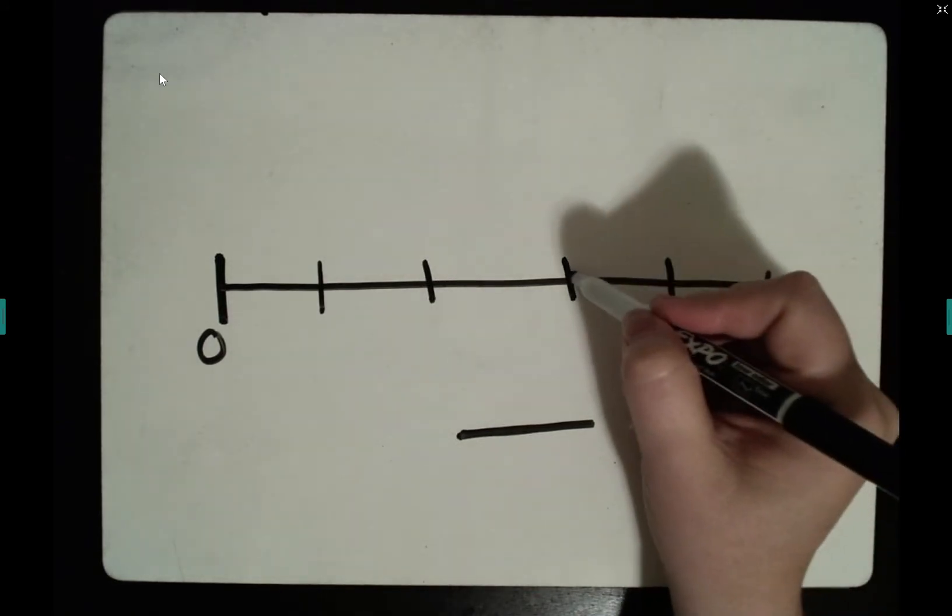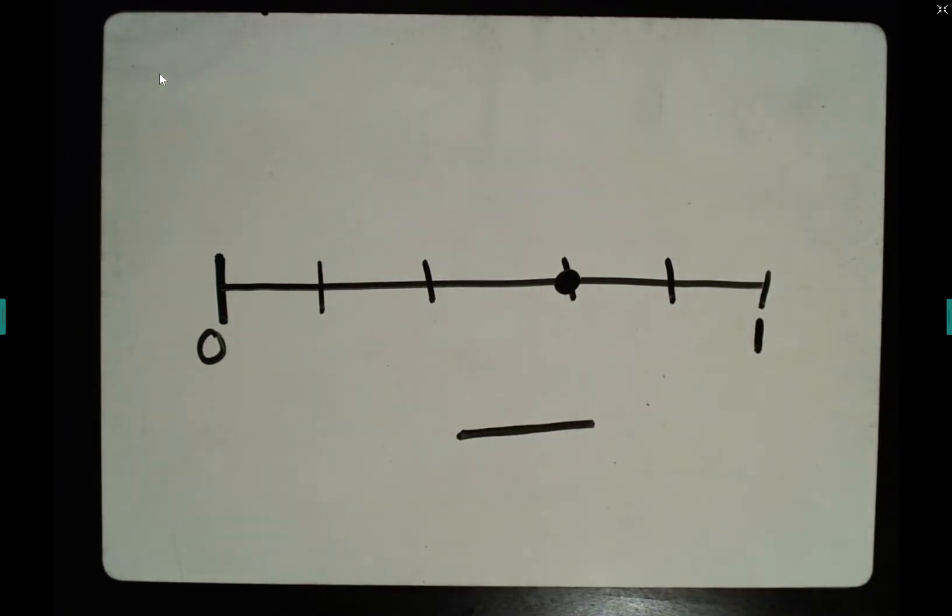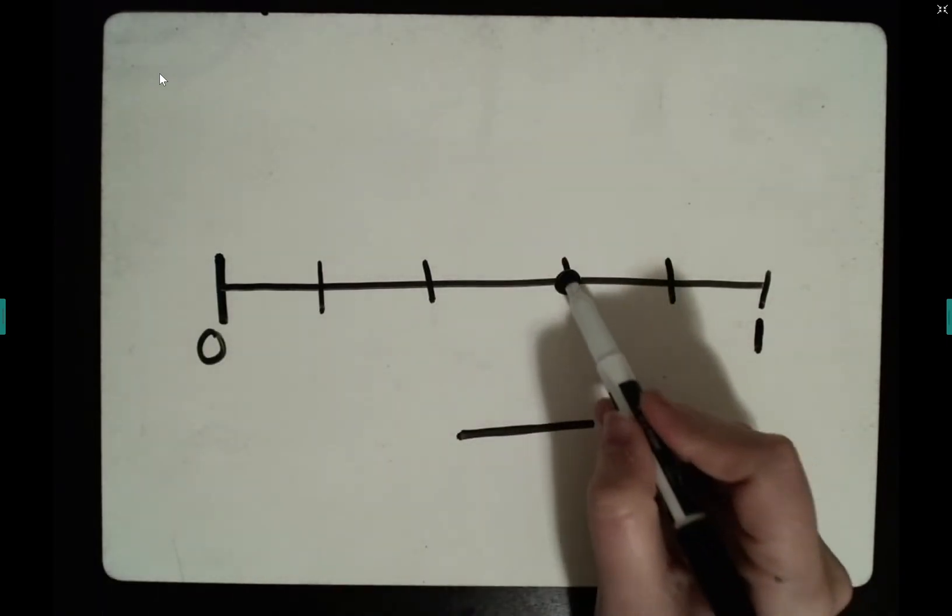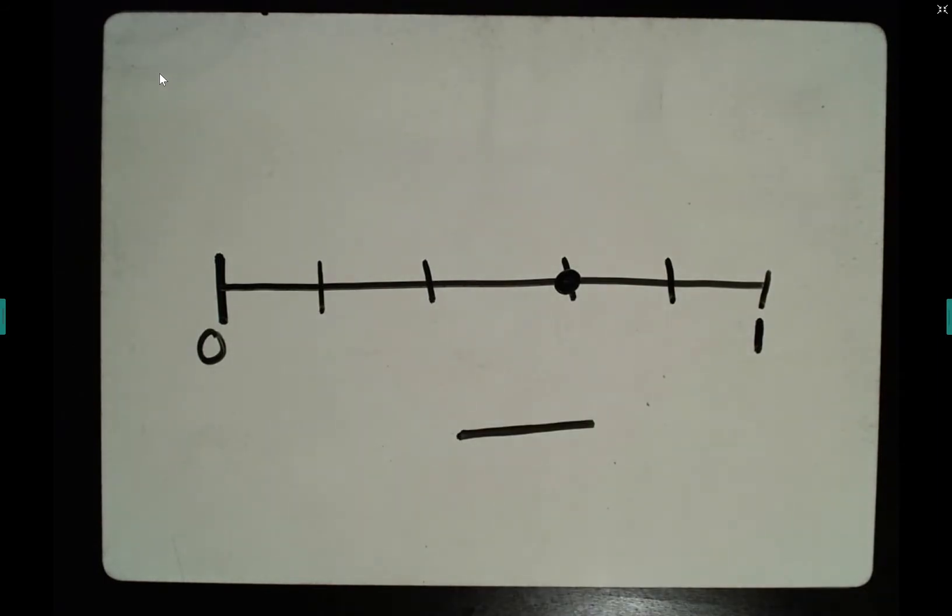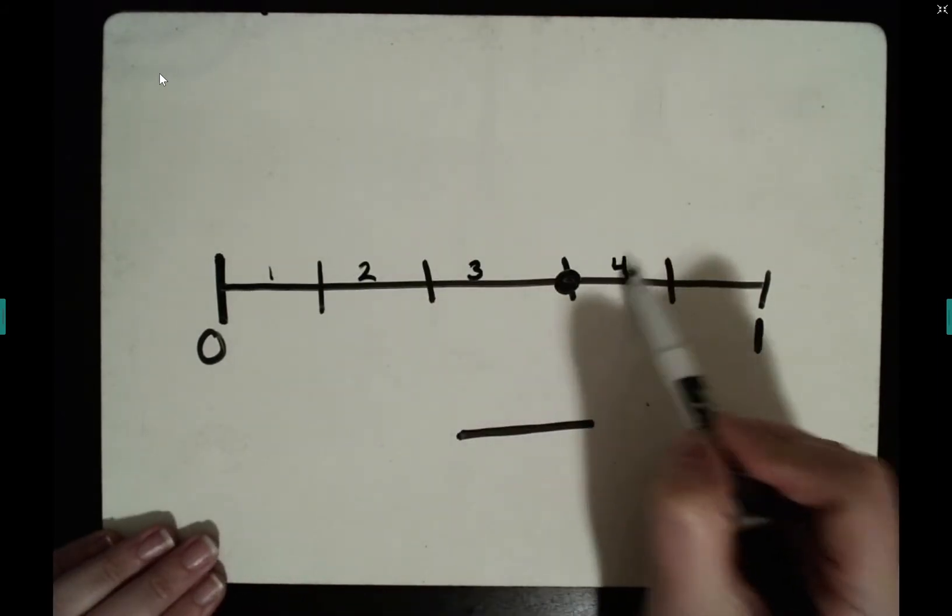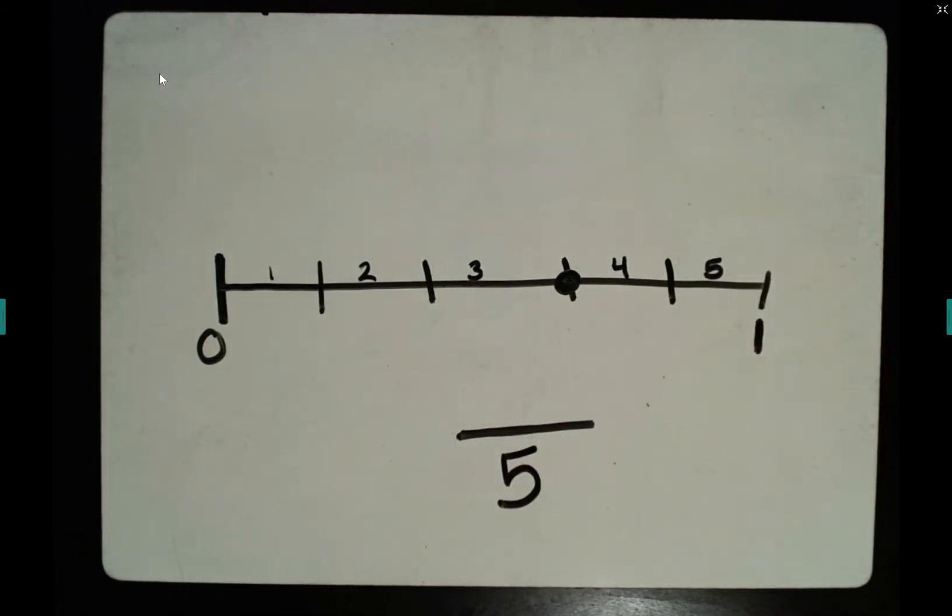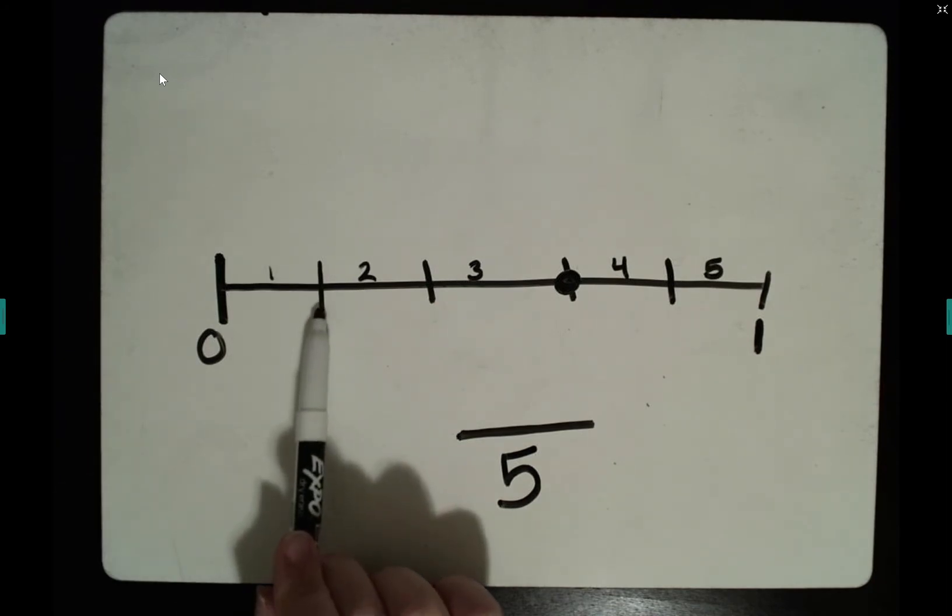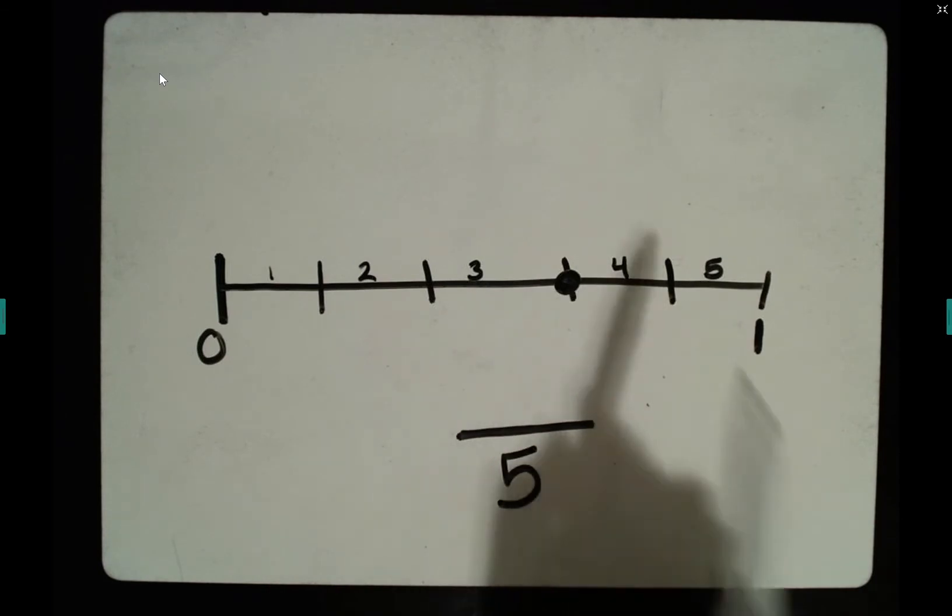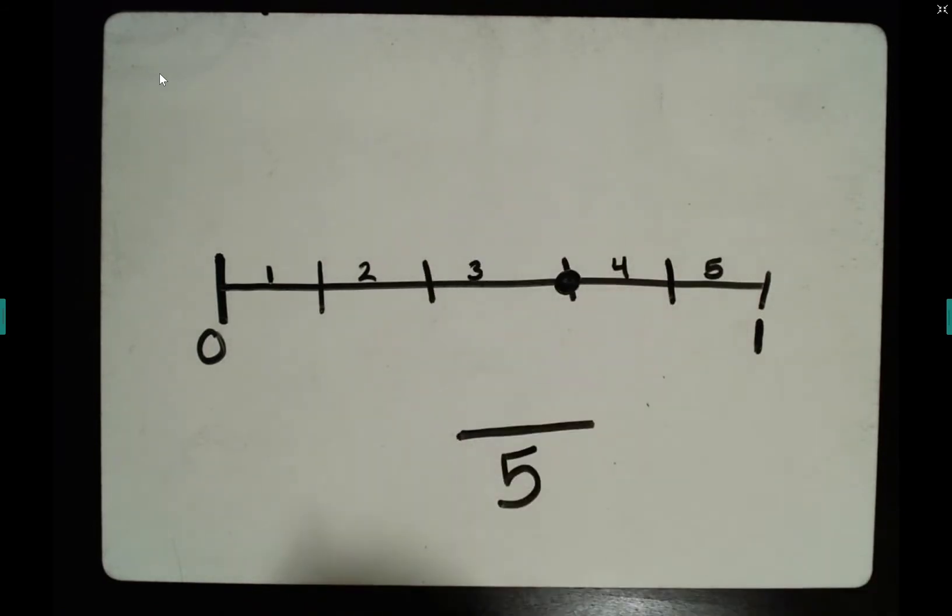So I want to know where my dot is. What fraction is this? What fraction is my line showing? We need to know how many equal parts this line has been broken into. There's one, two, three, four, five. It is broken into five equal parts. Do not count the lines. If you count the lines, you're not going to get the right answer. Count the spaces between the lines.